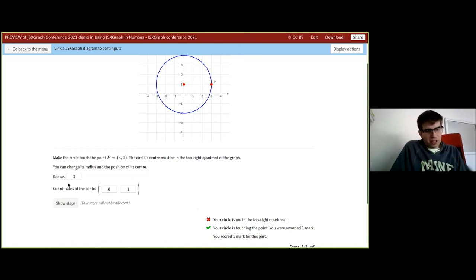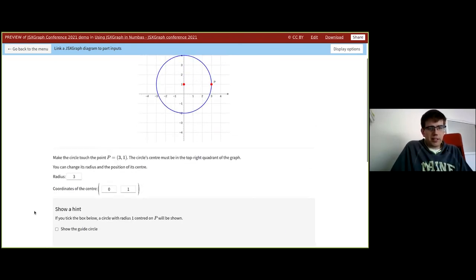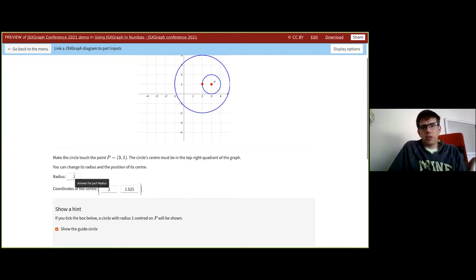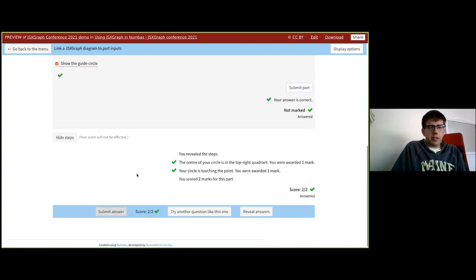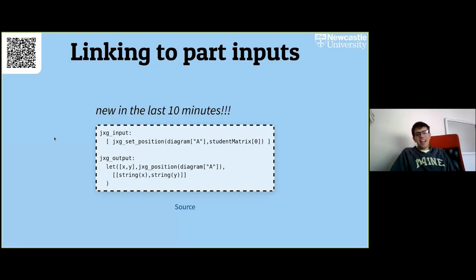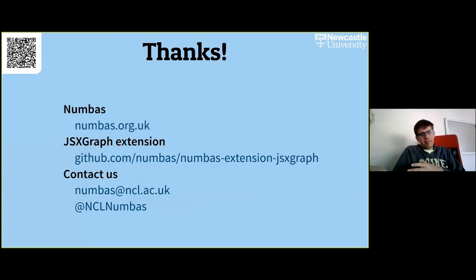I've also got a tick box here so I can show a circle of radius one around point P just in case it helps. I could have set up an 'attach to objects' attribute on this point to let me drag it directly onto that circle and then give my circle radius one. So I'll submit — there we go, two points. That's where I am. JSXGraph is something that lots of people are using in NUMBAS. If you haven't seen NUMBAS before, have a look at it, and I'm hoping to develop the extension a lot more. Thank you.